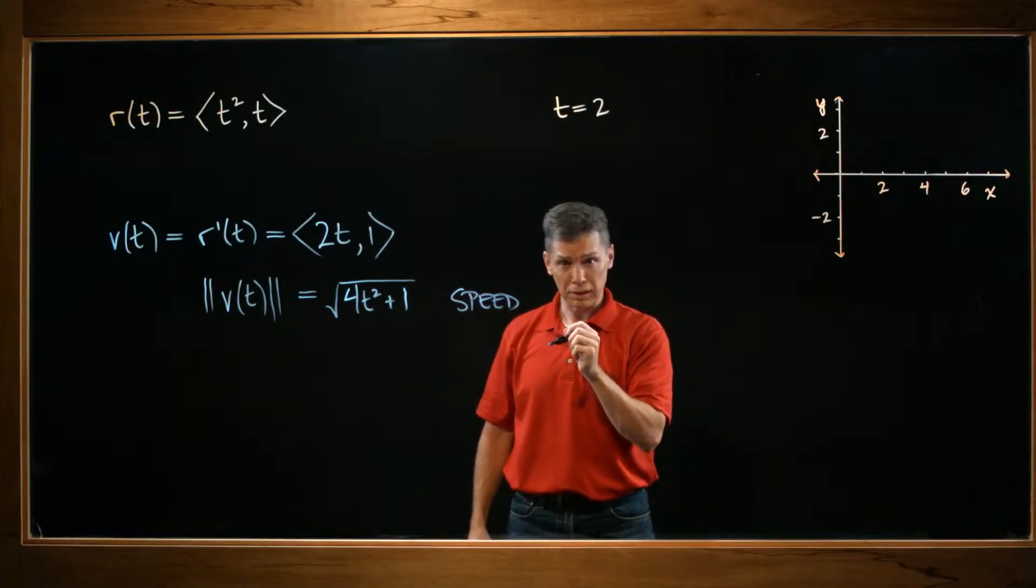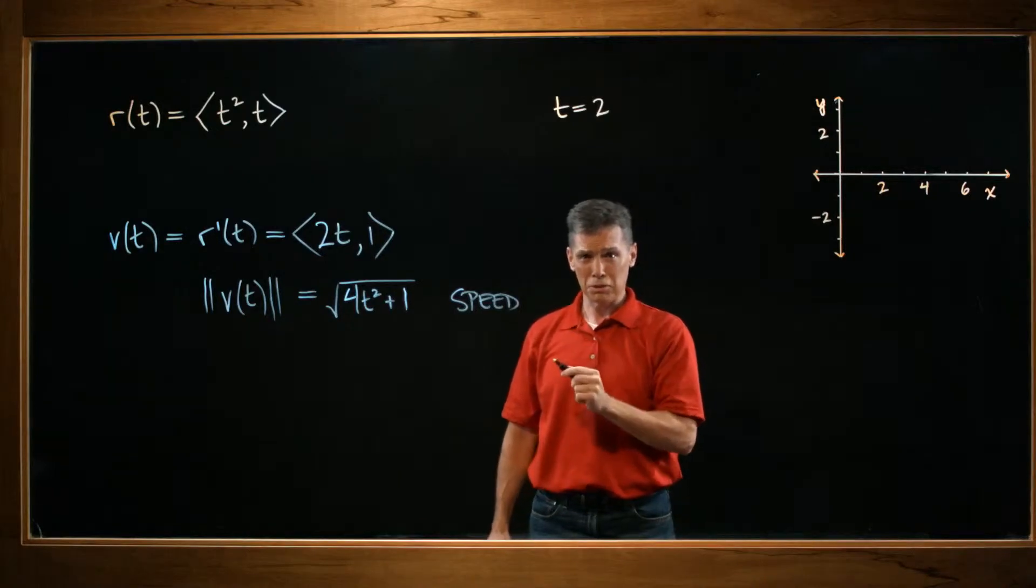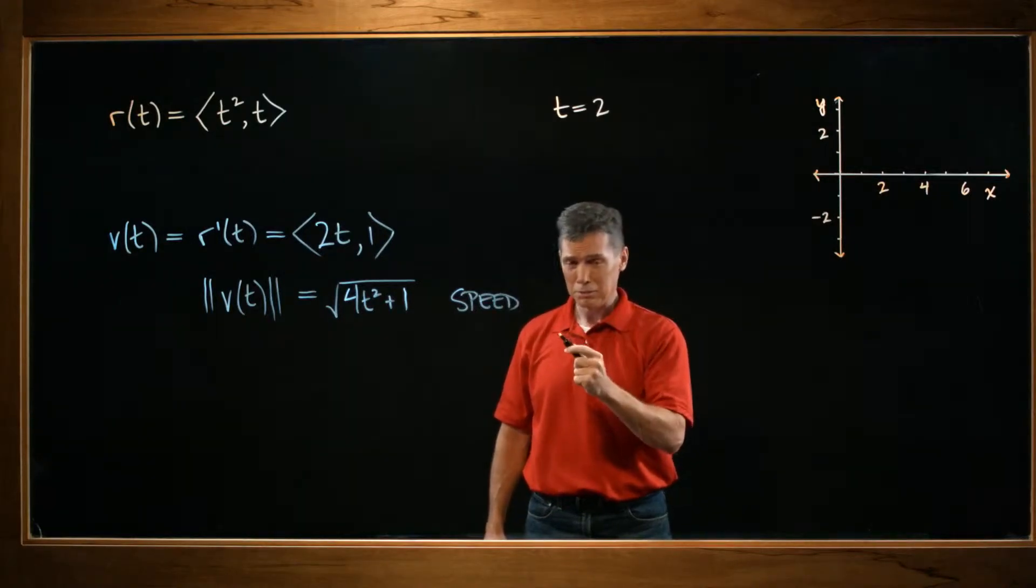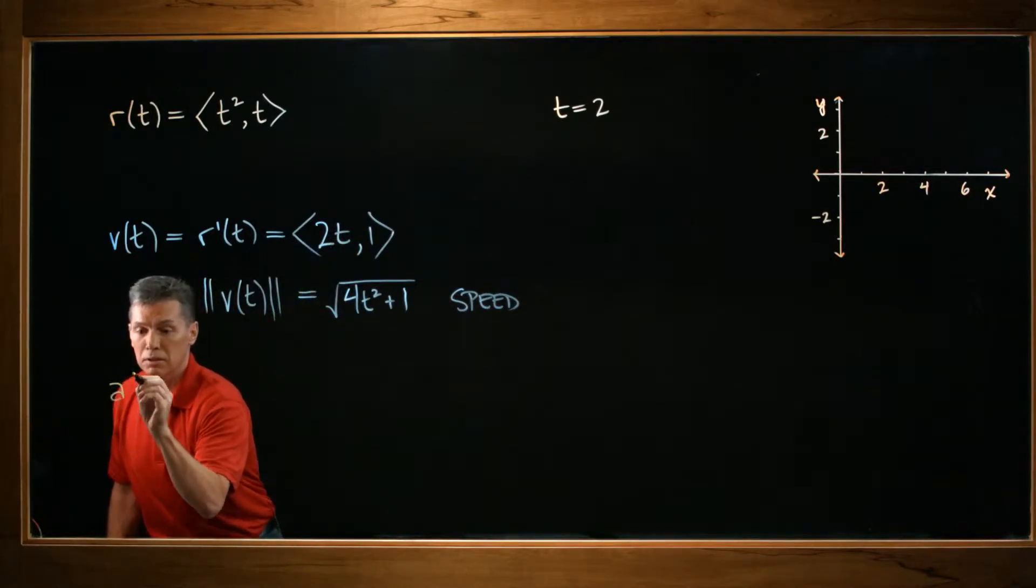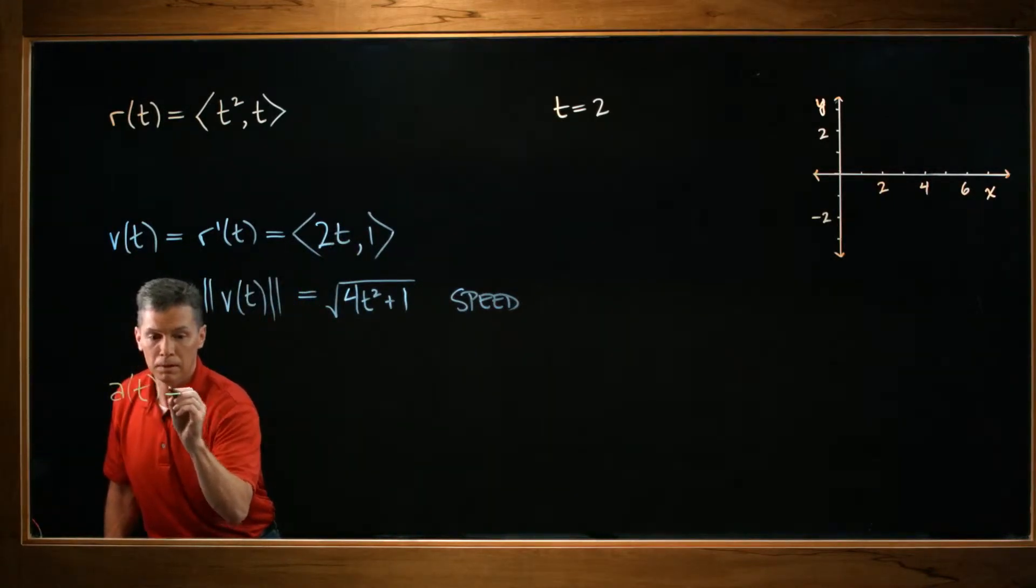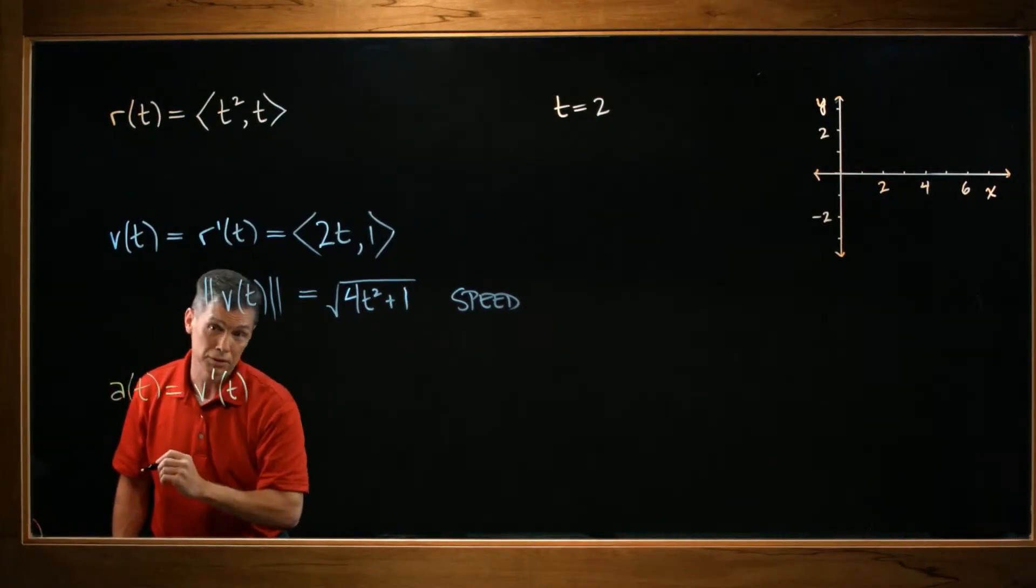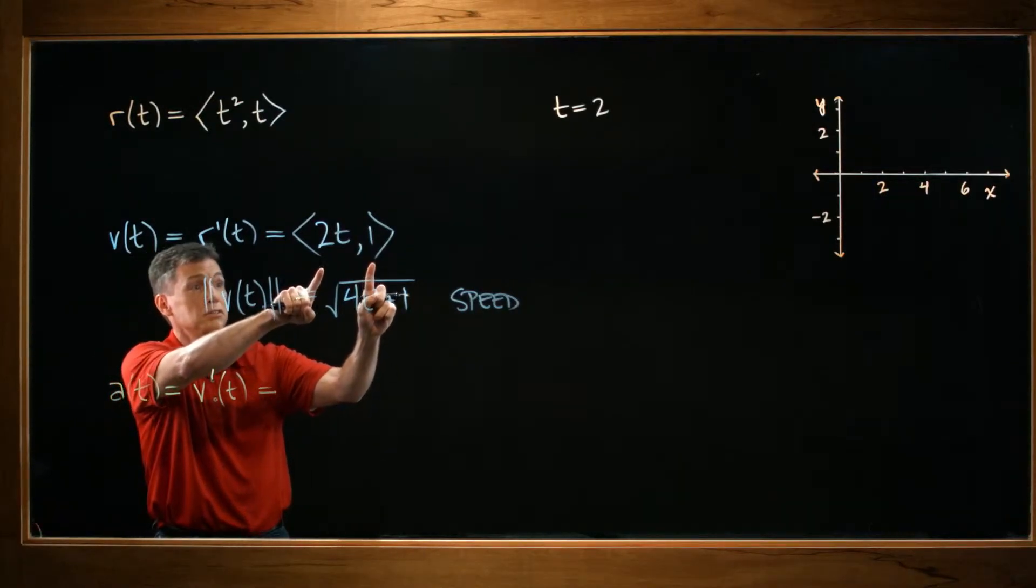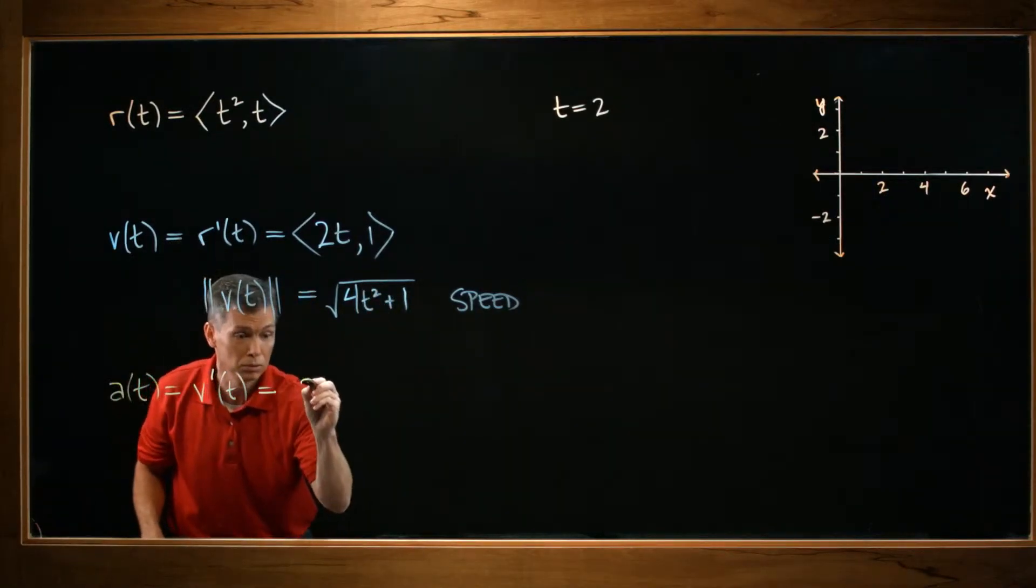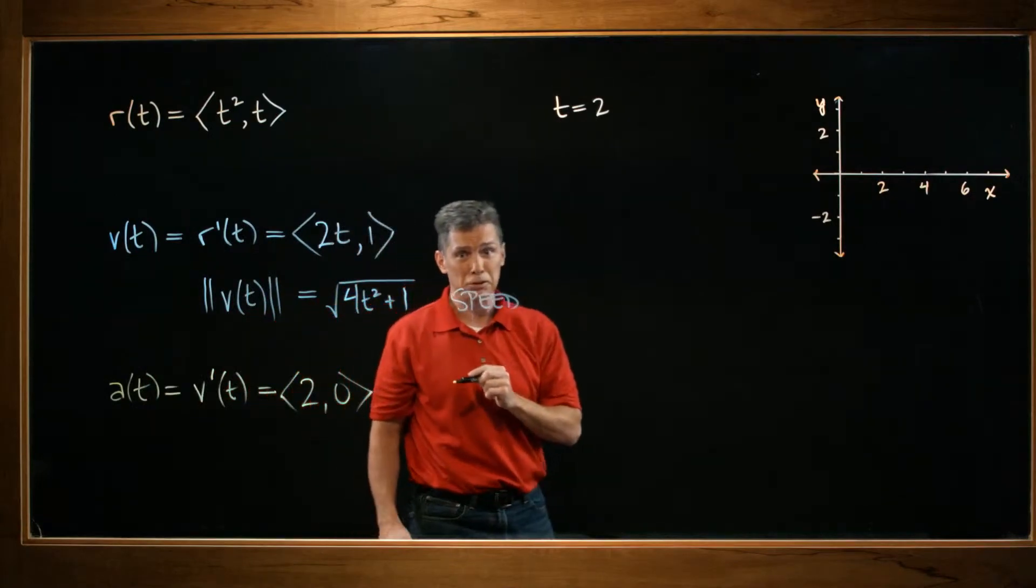And they also asked us to find acceleration as a vector. And that gets back to our relationships that you have to know. The relationship here, again, more good calculus. The relationship is that if I want the acceleration vector, it equals the derivative of the velocity vector. So I'm just looking up at my velocity vector and differentiating. So I'm getting 2 comma 0. And as a vector, that would be my answer for acceleration.